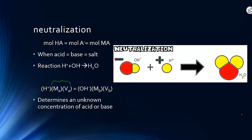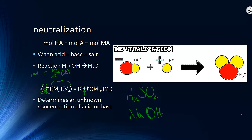You can determine the number of moles by taking the molarity — the number of moles per liter of solution — and multiplying by the volume. The molarity of the acid times the volume of acid has to equal the molarity of the base times the volume of the base, paying attention to the stoichiometric coefficients. A polyprotic acid would have two hydrogens that could neutralize the hydroxide, while a monoprotic base would have one hydroxide to neutralize the acid.